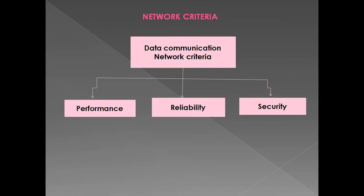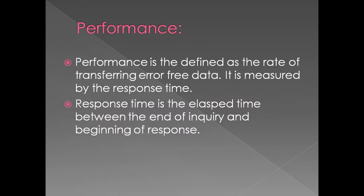Data communication network criteria is divided into three parts: performance, reliability, and security. Performance is defined as the rate of transferring error-free data. It is measured by response time, which is the time between the end of an inquiry and the beginning of the response.